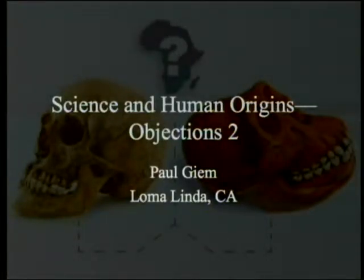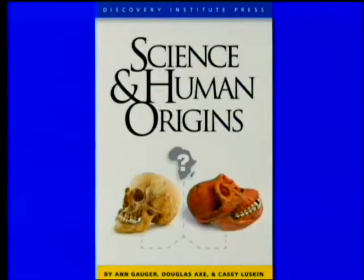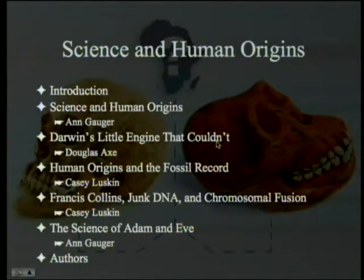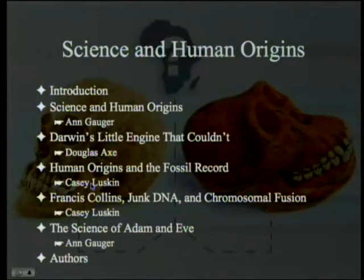Science and Human Origins, Objections, Part 2. We've been discussing the book Science and Human Origins by Gauger, Axe, and Luskin, put out by the Discovery Institute Press. The chapters have been Science and Human Origins and Darwin's Little Engine, both arguing that evolution could not have gotten from apes to humans. We discussed the objections to that last week. We've been looking at Human Origins and the Fossil Record by Casey Luskin — that's the chapter we'll be particularly looking at now.